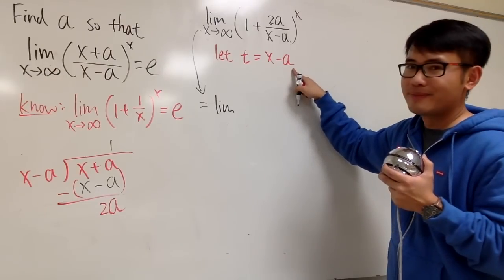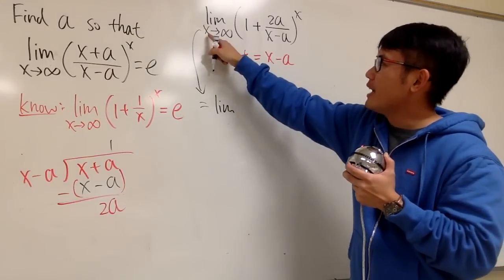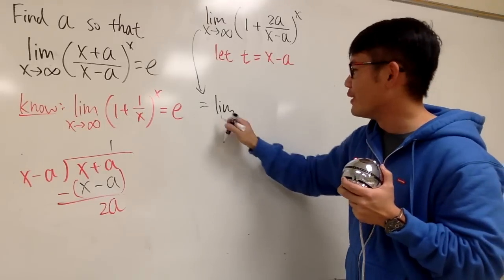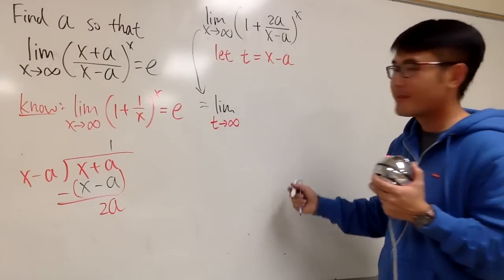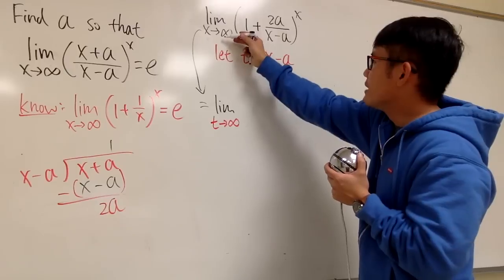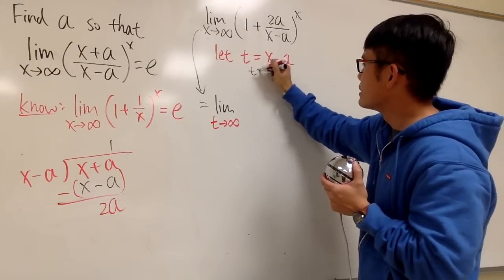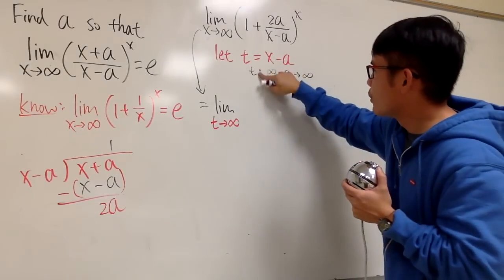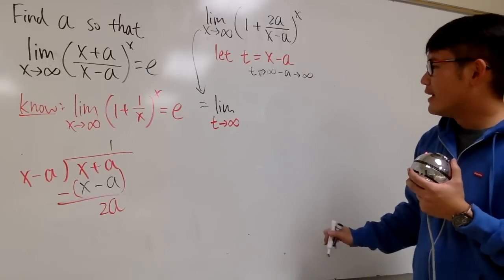Infinity minus finite is still infinity, right? So, instead of saying x is approaching infinity, in fact, t also goes to infinity as well. Once again, if x is infinity, you pretty much have infinity minus a. And, of course, that's pretty much just infinity. So, I should draw an arrow right here.